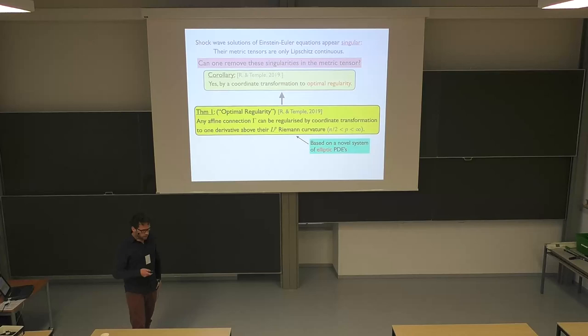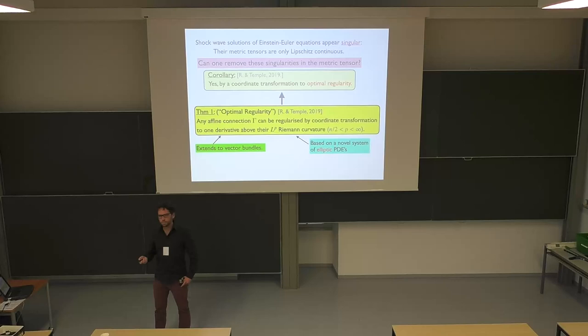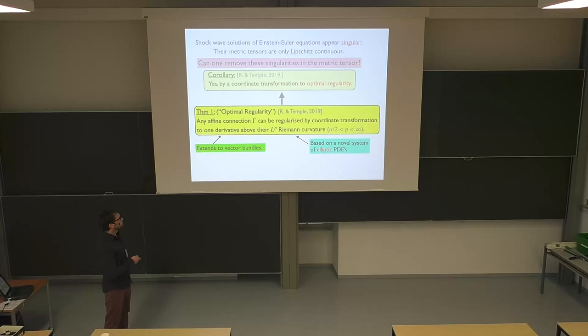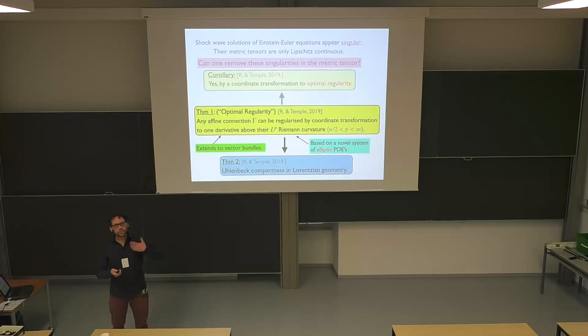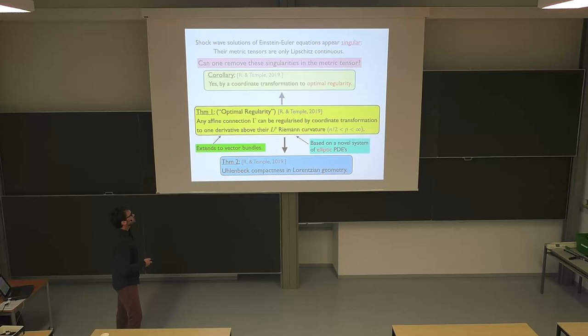This result can also be extended from connections on tangent bundles to connections on vector bundles, and it works for non-compact gauge groups S,O,R,S and so on. Because of the elliptic theory, you have uniform bounds, and from those uniform bounds, if you have a sequence of connections, you get compactness — that's Uhlenbeck compactness. This means you get compactness of a sequence of connections just from a uniform bound on the curvature alone, without needing a bound on the full connection derivative.